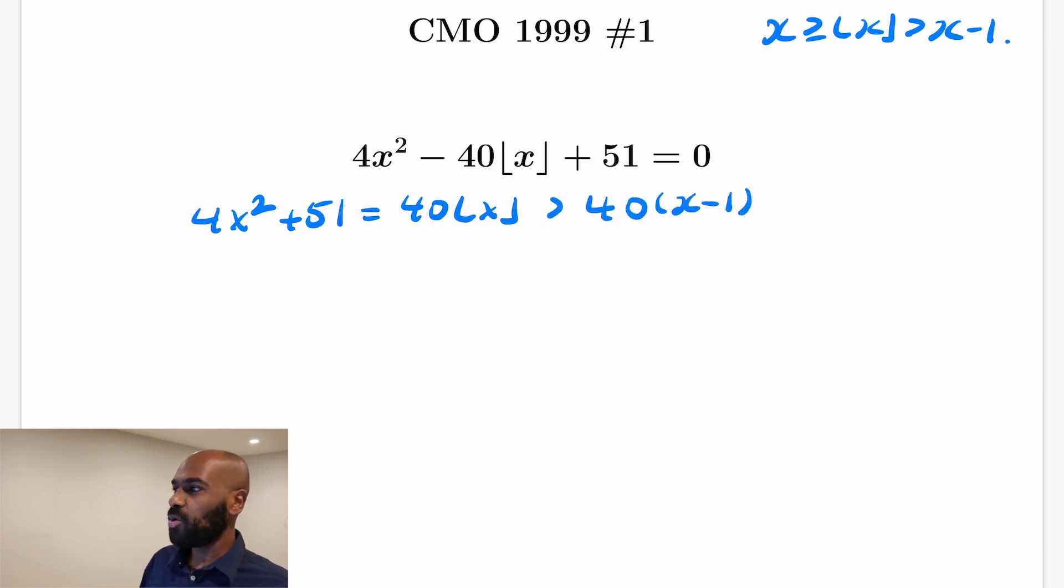This quantity has to be strictly greater than 40 times the quantity (x - 1). And if we rearrange this, this tells us that 4x² - 40x + 91 > 0. Now luckily 91 is 37 times 13, so we can actually factor this into (2x - 7)(2x - 13) > 0.